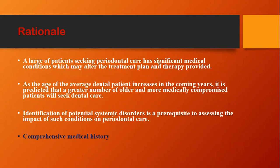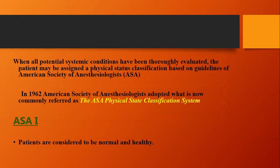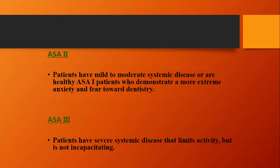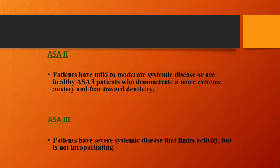After obtaining medical history, we need to know the potential systemic conditions, and their evaluation can be done using the American Society of Anesthesiologists classification, called the ASA. ASA gives a grading mechanism based on the physical state of the patient. ASA grade 1 patients are considered normal and absolutely healthy. ASA grade 2 patients have mild to moderate systemic disease but are relatively healthy.